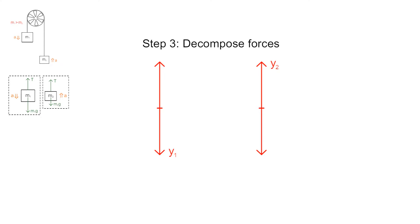Step 3 is to decompose all forces onto these coordinate systems. The Y1 component of M1's gravitational force is M1g, and the Y1 component of the tension force is negative T. It's negative because it points in the negative Y1 direction.